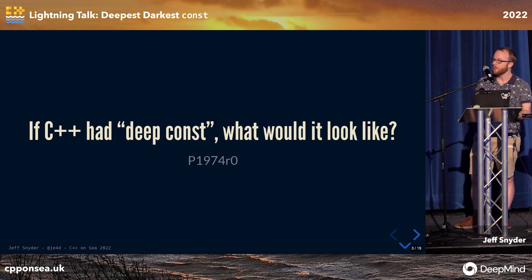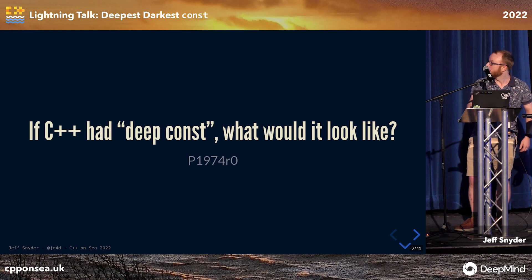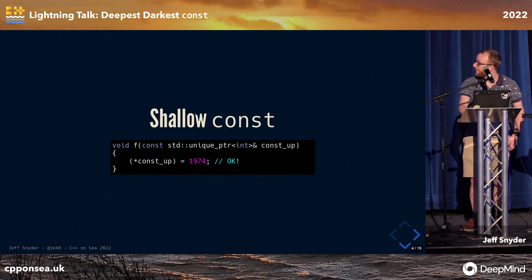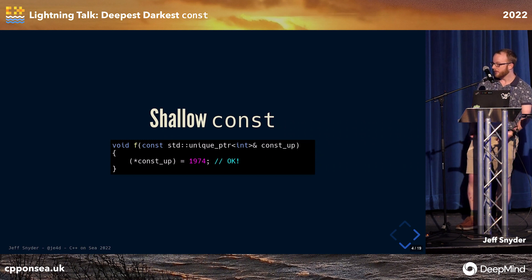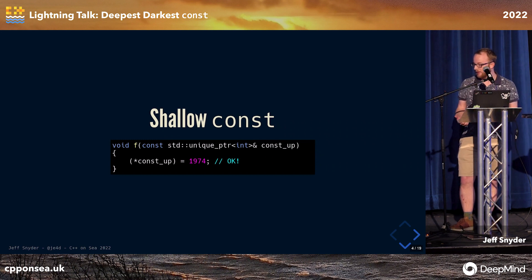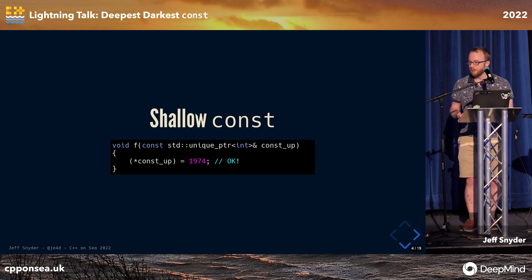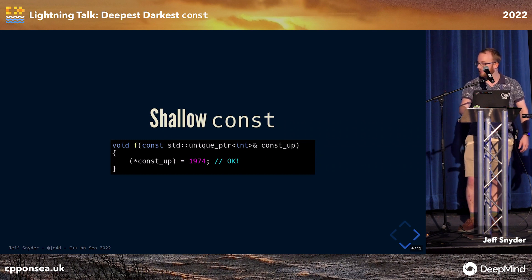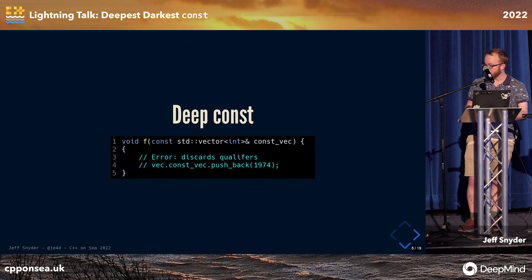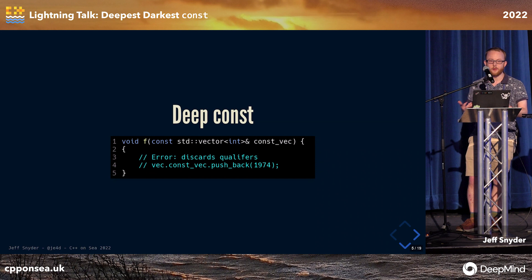The paper was basically looking at if we had deep const in the language, what would it look like? To briefly recap: shallow const is something like unique_ptr, where the unique_ptr is const but the thing it refers to you can still modify as much as you want, because it's only the unique pointer itself that's actually const. Deep const is a type like vector, where it makes sure that you cannot actually modify the contents if the vector itself is const.